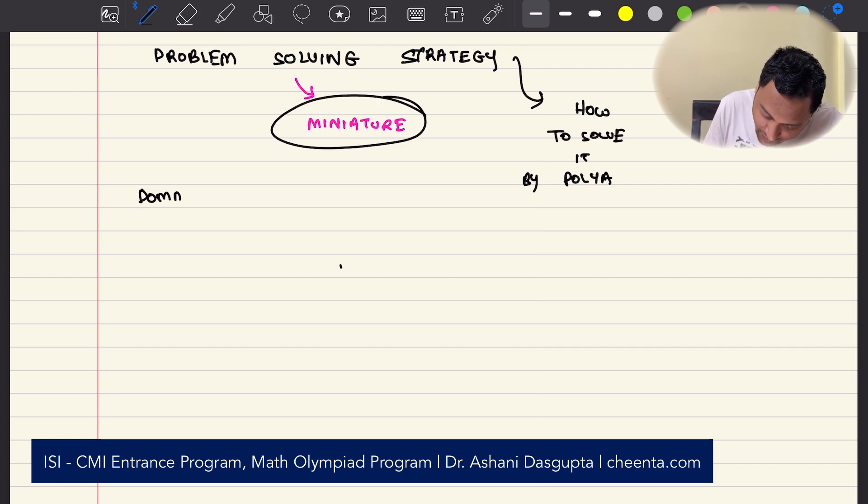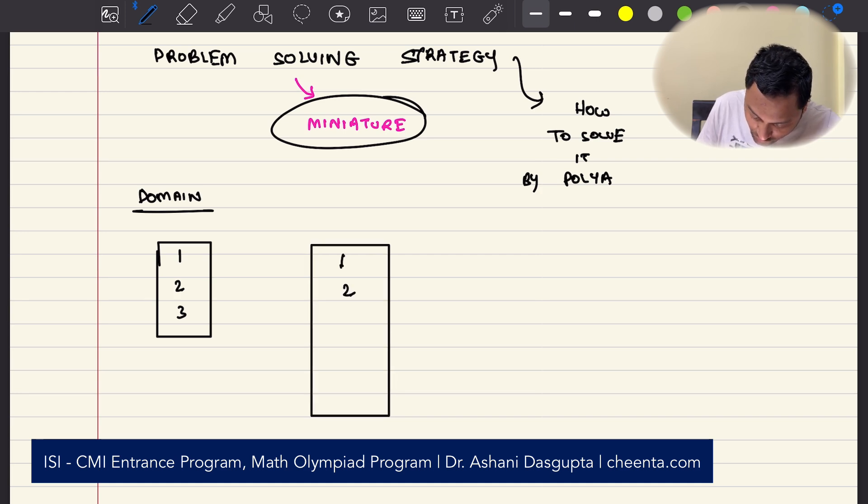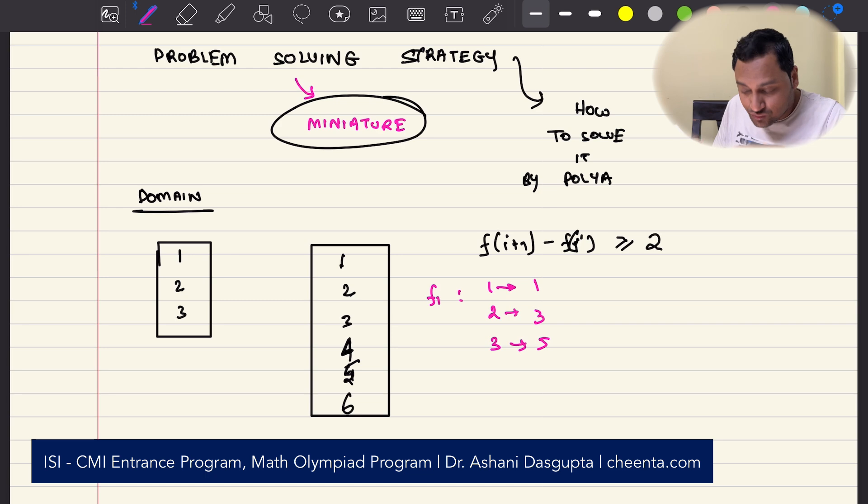So, let's go and see how this works. Maybe we can create a miniature like this, that the domain has 3 numbers: 1, 2, 3, and the co-domain has 1, 2, 3, 4, 5, 6. And let's say the condition is f(i+1) - f(i) is greater than or equal to 2. So, the gap is 2 or more. We can actually write down all such functions in a systematic manner. So, the first function of that kind will be 1 goes to 1, 2 goes to 3, 3 goes to 5. So, the gap is exactly 2.